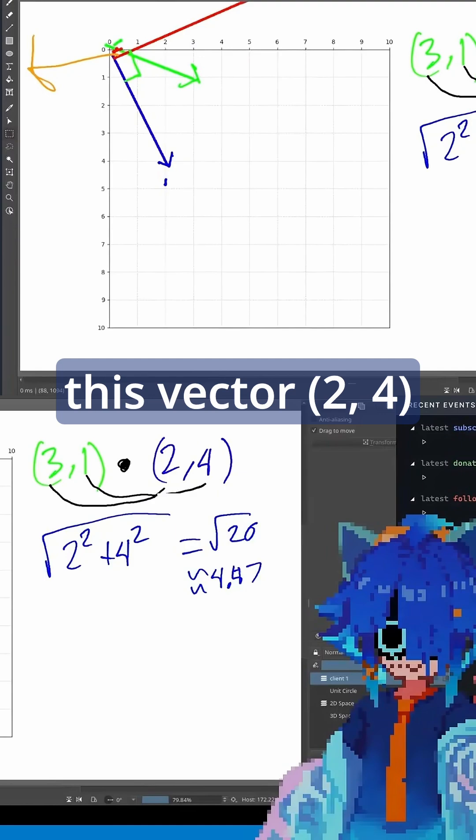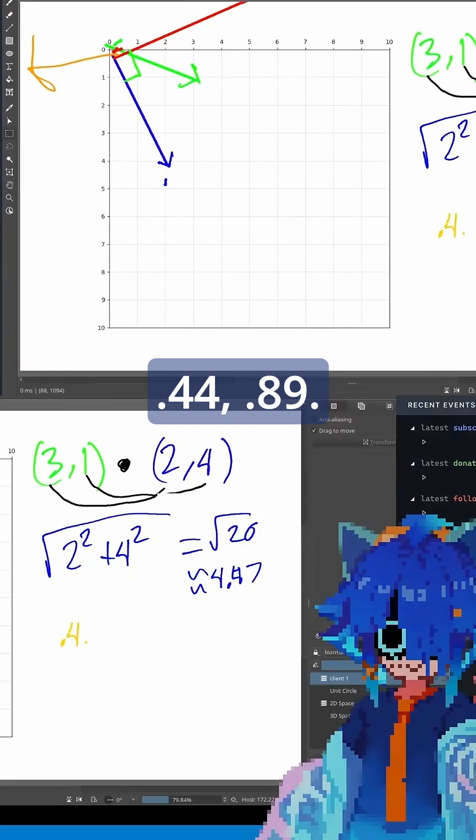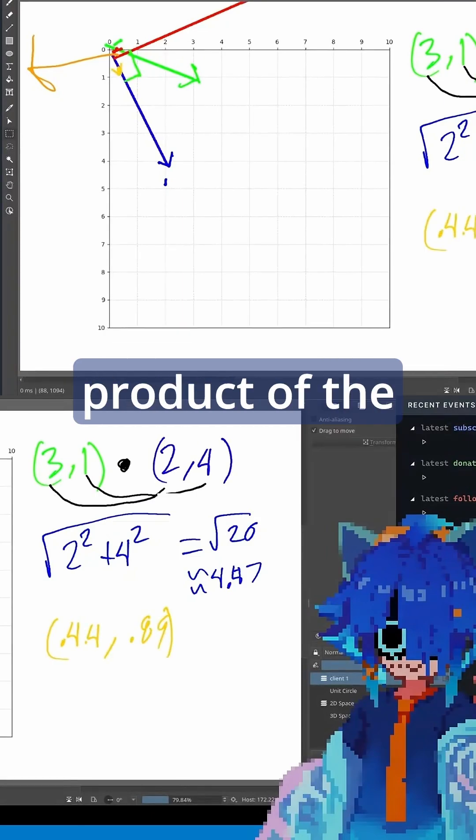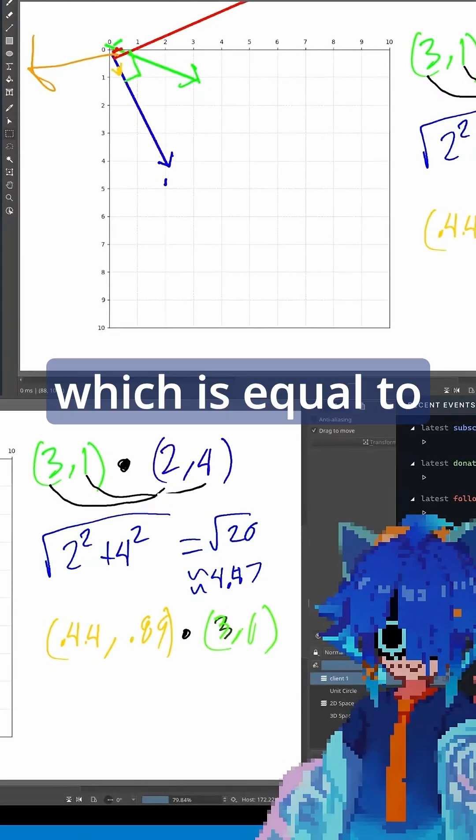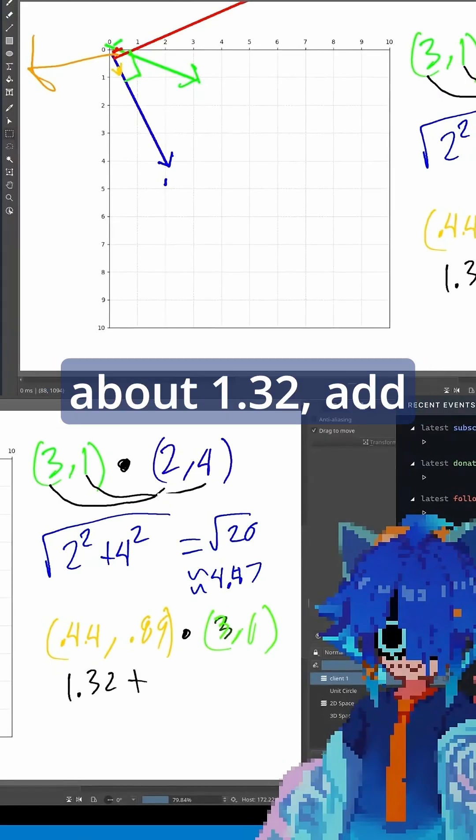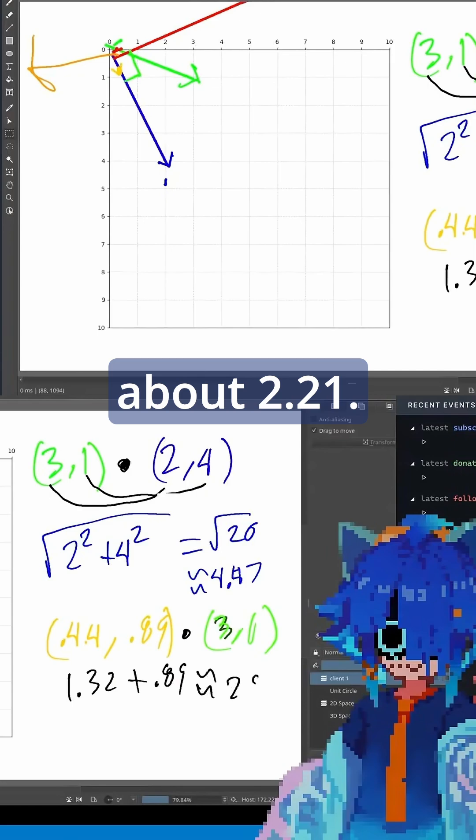So when we take this vector 2, 4 divided by 4.47, we get the vector 0.44, 0.89. And then if we take the dot product of the other vector, so 3, 1 with this, we take 3 times 0.44, which is equal to about 1.32, add it to the 0.89, and we get about 2.21.